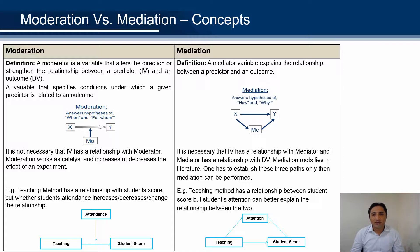So it's the mediation model — attention becomes a mediator between teaching and student score. Other examples of a moderator can be gender or parents.